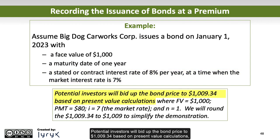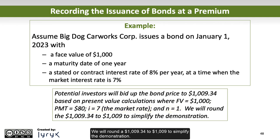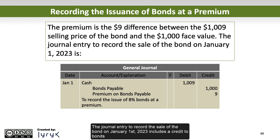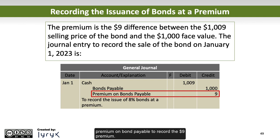Potential investors will bid up the bond price to $1,009.34 based on present value calculations, where FV = $1,000, PMT = $80, I = 7 (the market rate), and N = 1. We will round $1,009.34 to $1,009 to simplify the demonstration. The premium is the $9 difference between the $1,009 selling price and the $1,000 face value. The journal entry to record the sale on January 1, 2023 includes a credit to bonds payable for $1,000 and a credit to the premium on bonds payable account for the $9 premium.